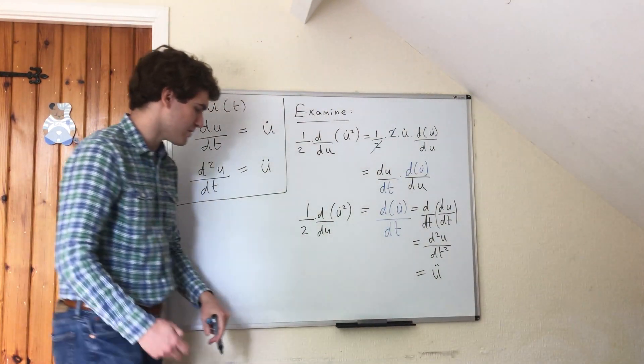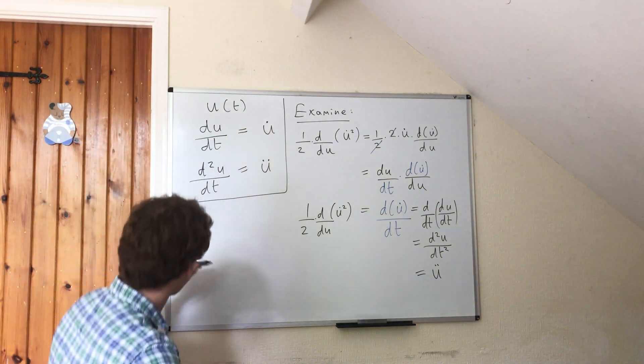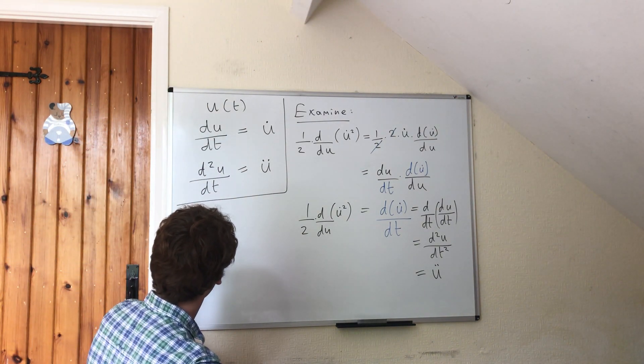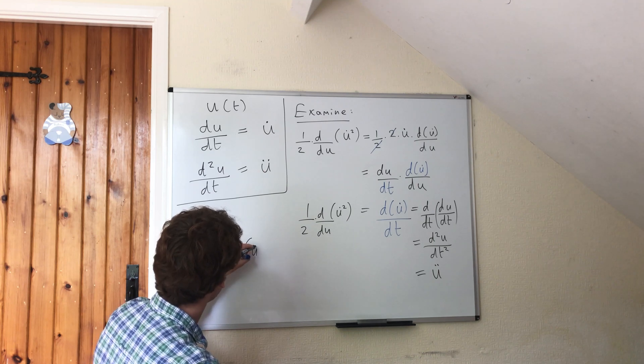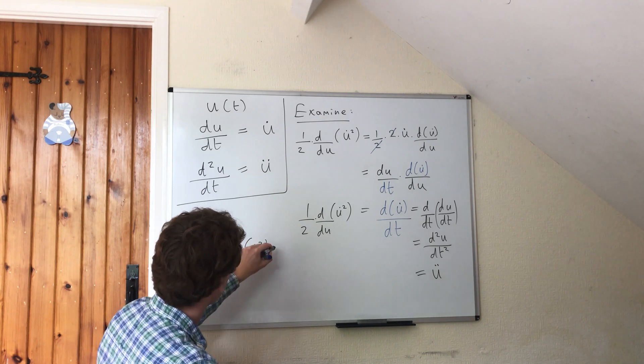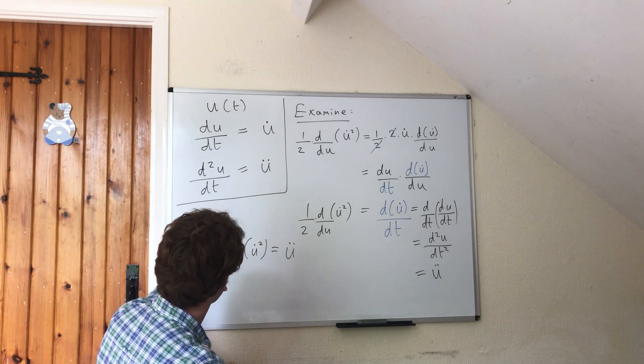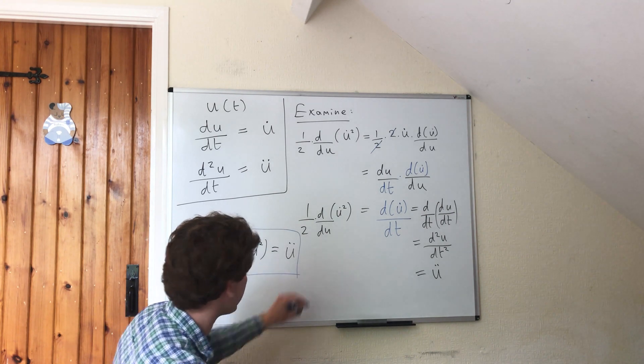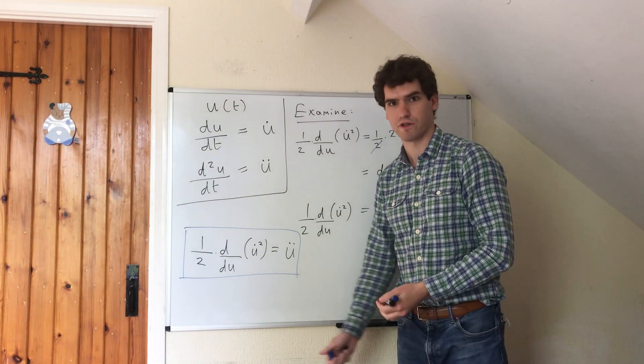So we end up with the very useful result: a half d by du of u dot squared is equal to u double dot. And we'll be using that in a couple of videos' time to help us integrate some equations of motion.